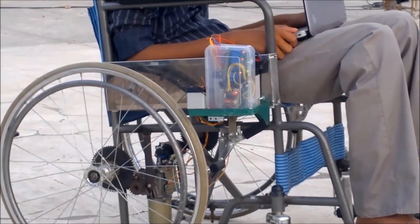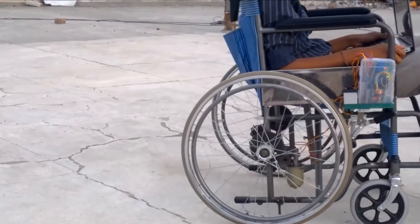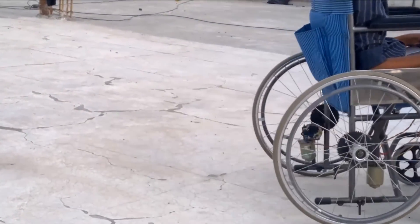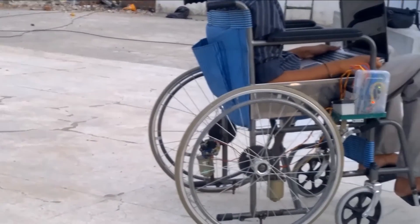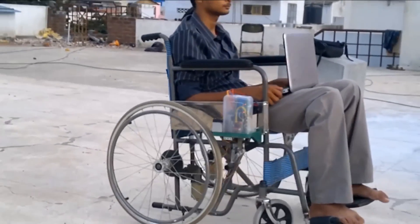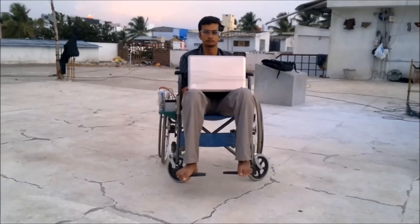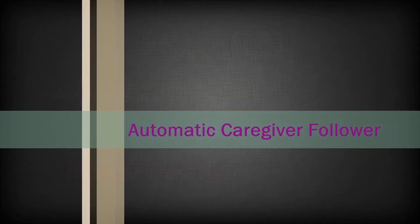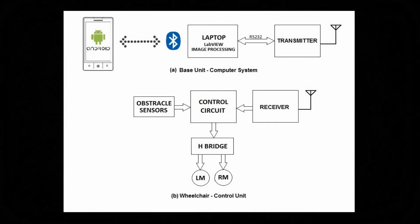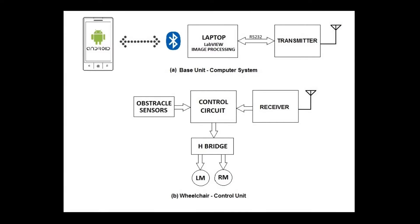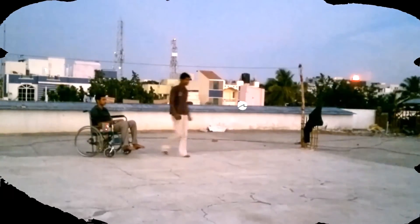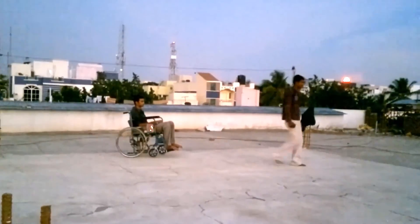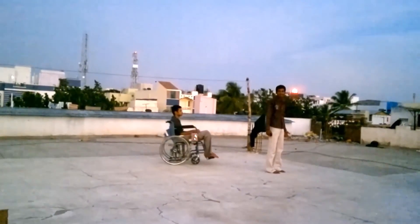This is the control unit of the system, which receives signals from the laptop and correspondingly drives the motors. When the caregiver wants to take the patient outdoors, it isn't necessary for them to push the wheelchair. Instead, this system can track the caregiver and follow them automatically.